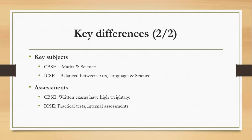For CBSE, math and science are the primary subjects and these have practical application knowledge. Whereas ICSE has a balanced set of subjects between arts, language, and science — it doesn't give priority to any of these subjects. A student is independent enough to choose whatever subject they want.